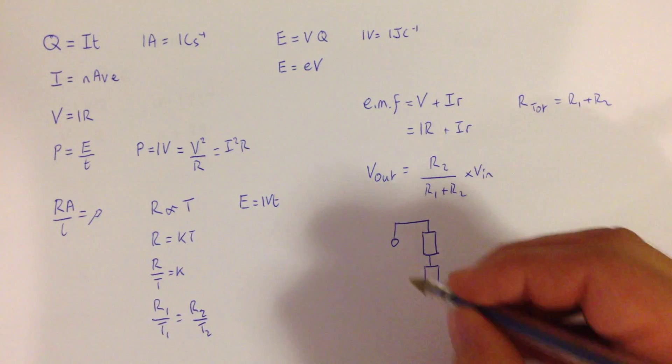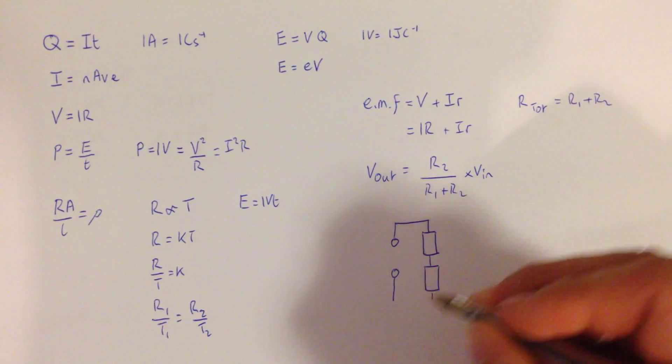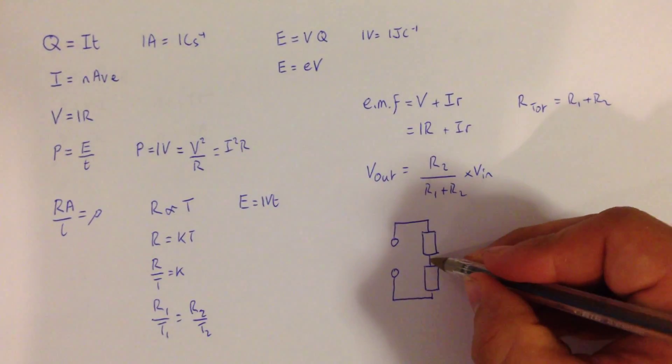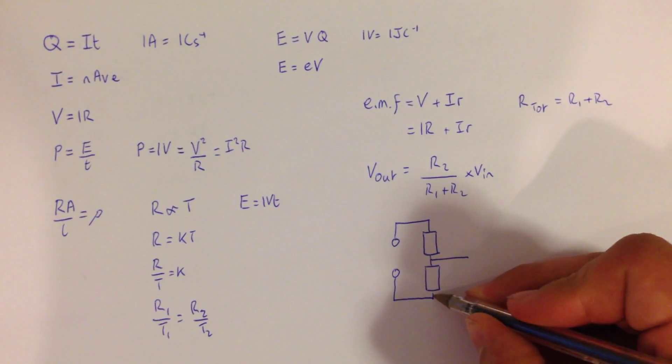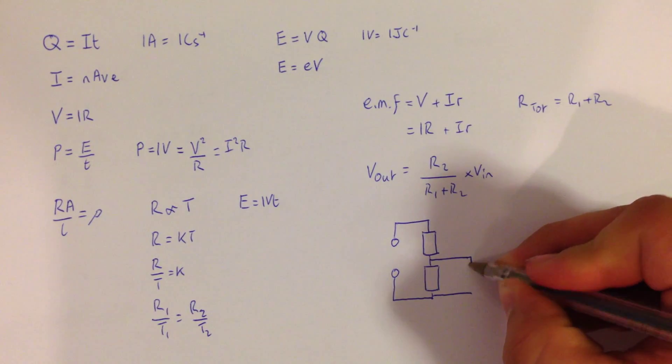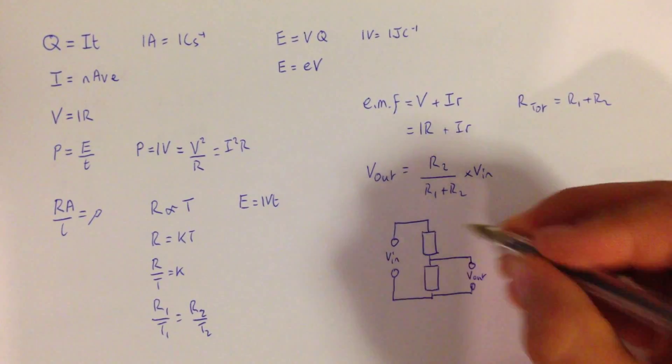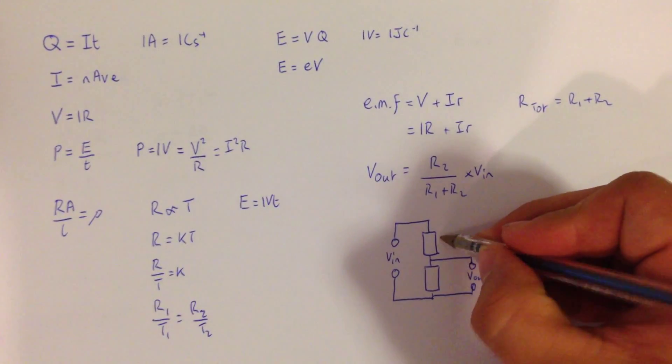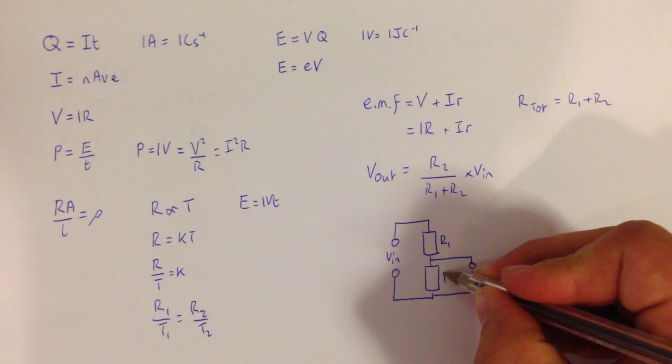So we have to have two resistors, and these could be, one could be a thermistor, one could be an LDR, and then we have a voltage coming out. Now that could have a component in, so we've got V in and V out, and then this one would be R1, and this would be R2.